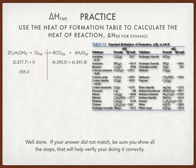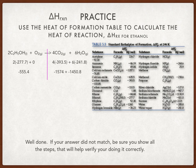On the right-hand side, four times negative three ninety-three point five gives you negative fifteen seventy-four. Six times negative two forty-one point eight gives you negative fourteen fifty point eight. Go ahead and add those two values: negative fifteen seventy-four plus negative fourteen fifty point eight — you should get negative three oh two four point eight.